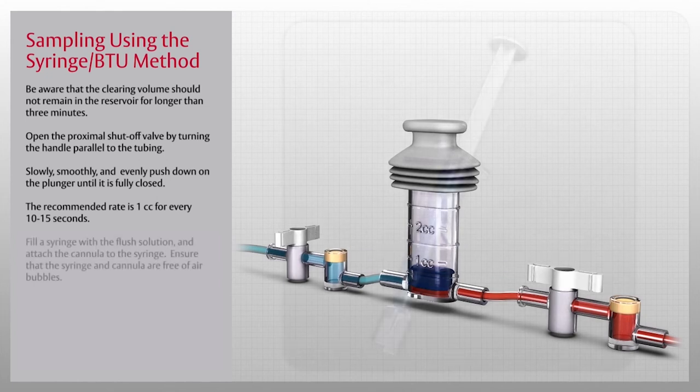Next, fill a syringe with the flush solution and attach the cannula to the syringe. Ensure that the syringe and cannula are free of air bubbles.